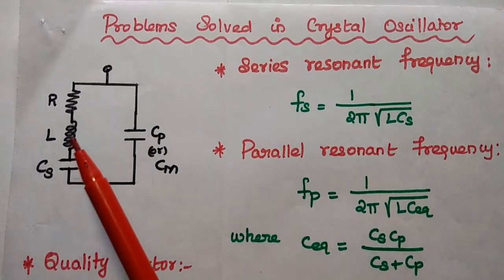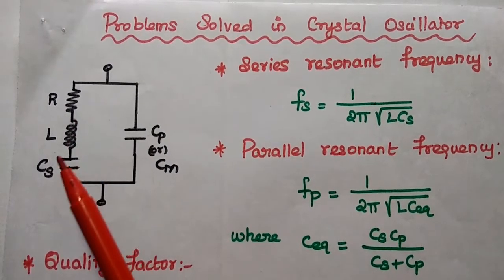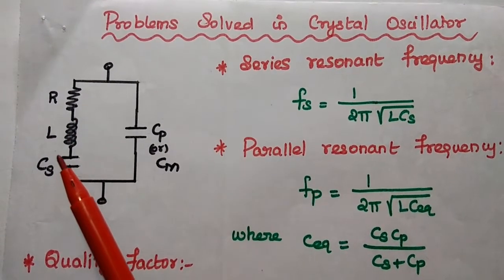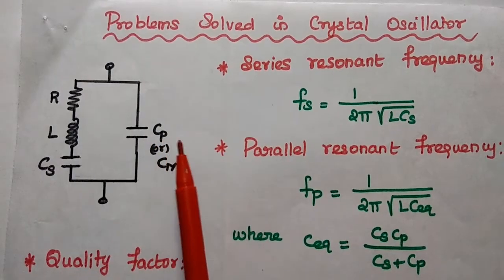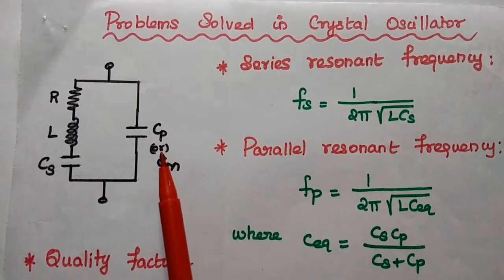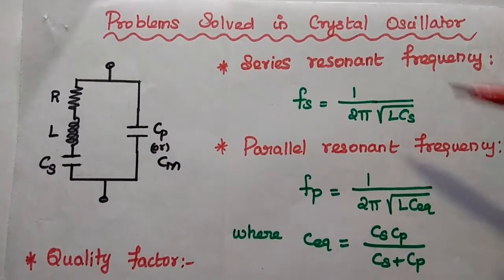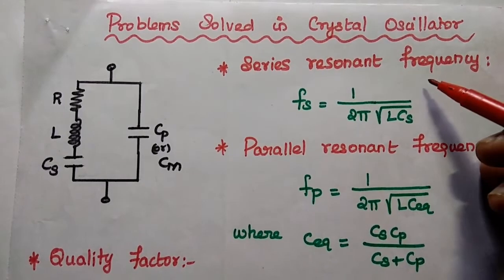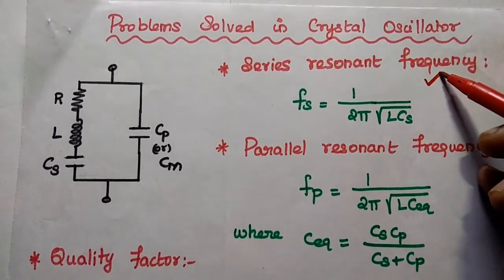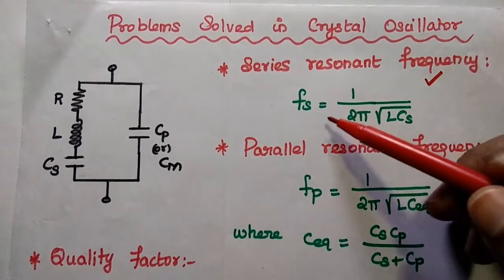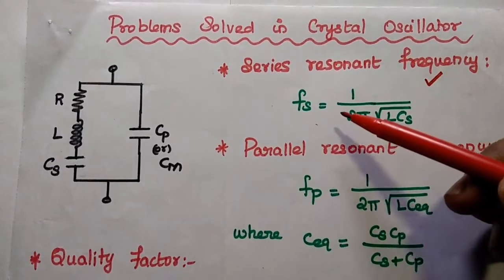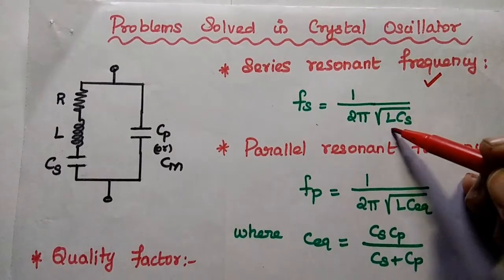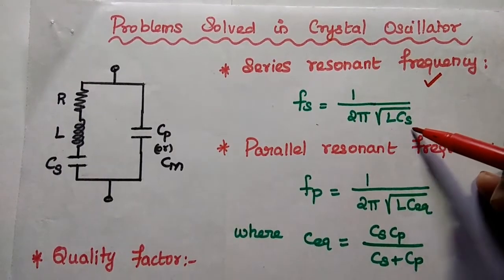The series combination of R, L, and the series capacitance is in parallel with the parallel capacitance. The important formula we will use: series resonant frequency, denoted as Fs, is equal to 1 by 2π times the square root of L into Cs.